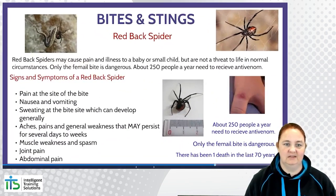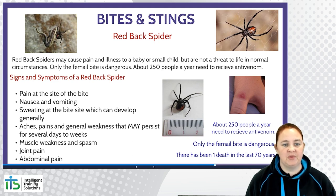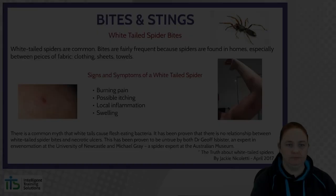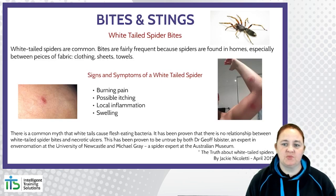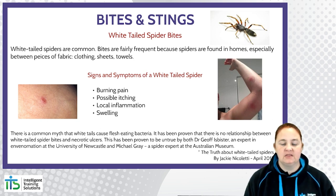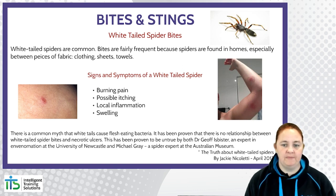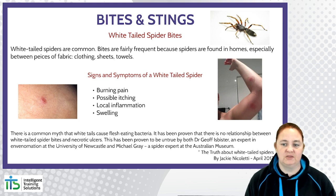Red-backed spiders may cause pain and illness to a baby or small child but are not normally a threat to life. Only the female bite is dangerous, and about 250 people a year need to receive the antivenom. Signs and symptoms include pain at the site, nausea and vomiting, sweating at the bite site which can develop generally, aches, pains and general weakness that may persist for days to weeks, muscle weakness and spasm, joint pain and abdominal pain. White-tailed spiders are common in homes, especially between pieces of fabric, clothing, sheets or towels. Signs and symptoms include burning pain, possible itching, local inflammation and swelling. There is a common myth that whitetails cause a flesh-eating bacteria, but it has been proven by Dr. Jeff Isbister, an expert in envenomation at the University of Newcastle, and Michael Gray, a spider expert at the Australian Museum, that there is no relationship between whitetail spiders and necrotic ulcers.